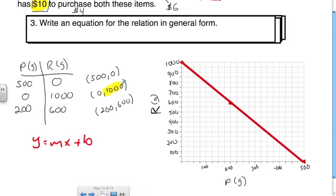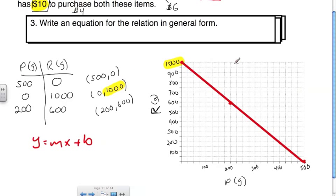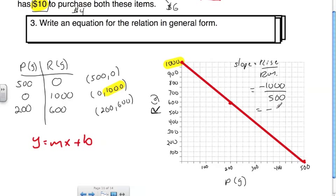I have the y-intercept — it's 1,000, where the line hits the y-axis. All I'm missing is the slope. The slope is rise over run. Using the two endpoints: rise is negative 1,000 and run is positive 500. That gives a slope of negative 2, since negative 1,000 divided by 500 is negative 2. So slope is negative 2 and y-intercept is 1,000.